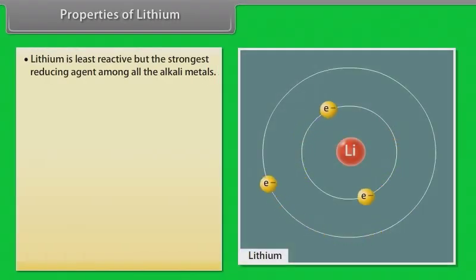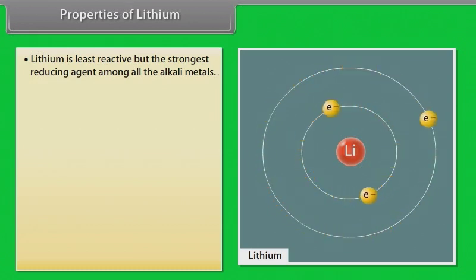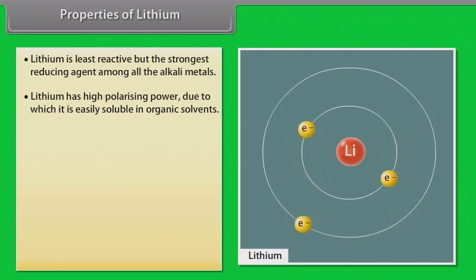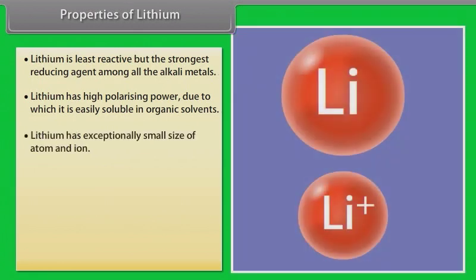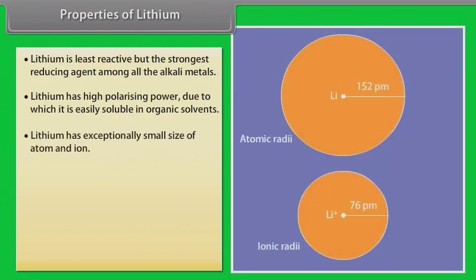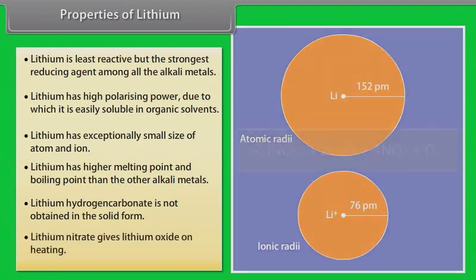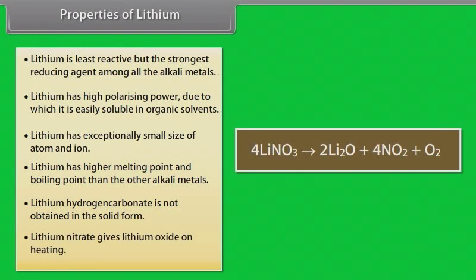Properties of lithium. Lithium is the least reactive but the strongest reducing agent among all the alkali metals. Lithium has high polarizing power, due to which it is easily soluble in organic solvents. Lithium has an exceptionally small size of atom and ion. Lithium has a higher melting point and boiling point than the other alkali metals. Lithium hydrogen carbonate is not obtained in solid form. Lithium nitrate gives lithium oxide on heating.